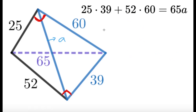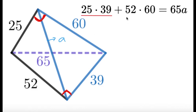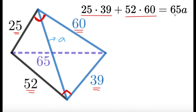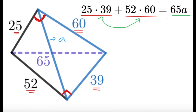So let's talk about Ptolemy's theorem. The theorem gives us this statement: 25 times 39 plus 52 times 60 equals 65 times A. Here 25 and 39 are opposite sides, 52 and 60 are opposite sides — we take the product of opposite sides and add them. And 65 and A are the two diagonals of the cyclic quadrilateral, so we multiply them. Ptolemy's theorem tells us the sum of the products of opposite sides equals the product of the diagonals.